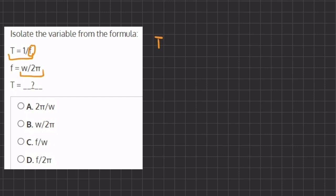So if we substitute it, we have T equals 1 divided by W divided by 2 pi. Now, let's take a look here on the side.